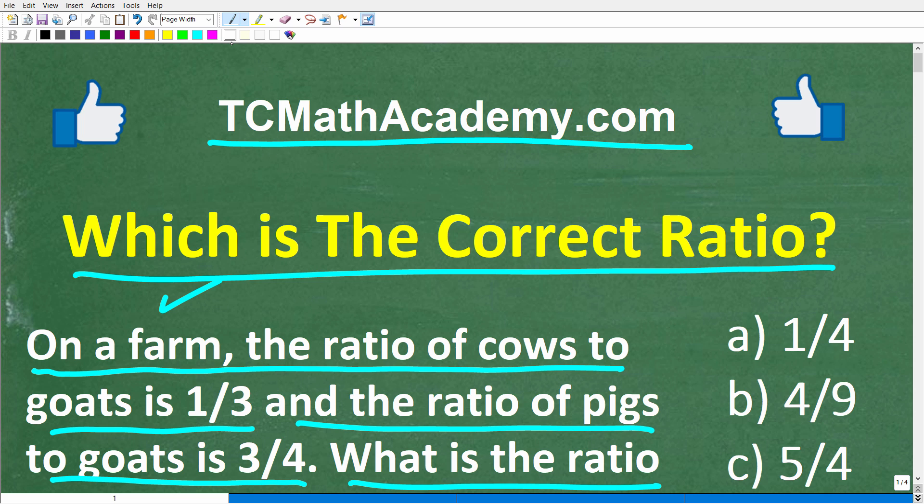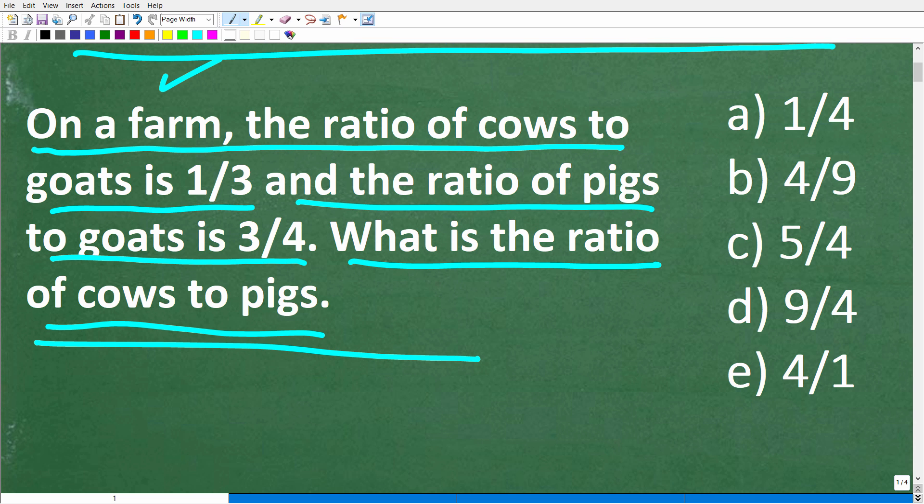If this video helps you out, or if you just enjoy this content, make sure to like and subscribe, as that definitely helps me out. All right, so one more time, we have a multiple choice math question. Our answer options are: A is 1 to 4, B is 4 to 9, C is 5 to 4, D is 9 to 4, and E is 4 to 1.